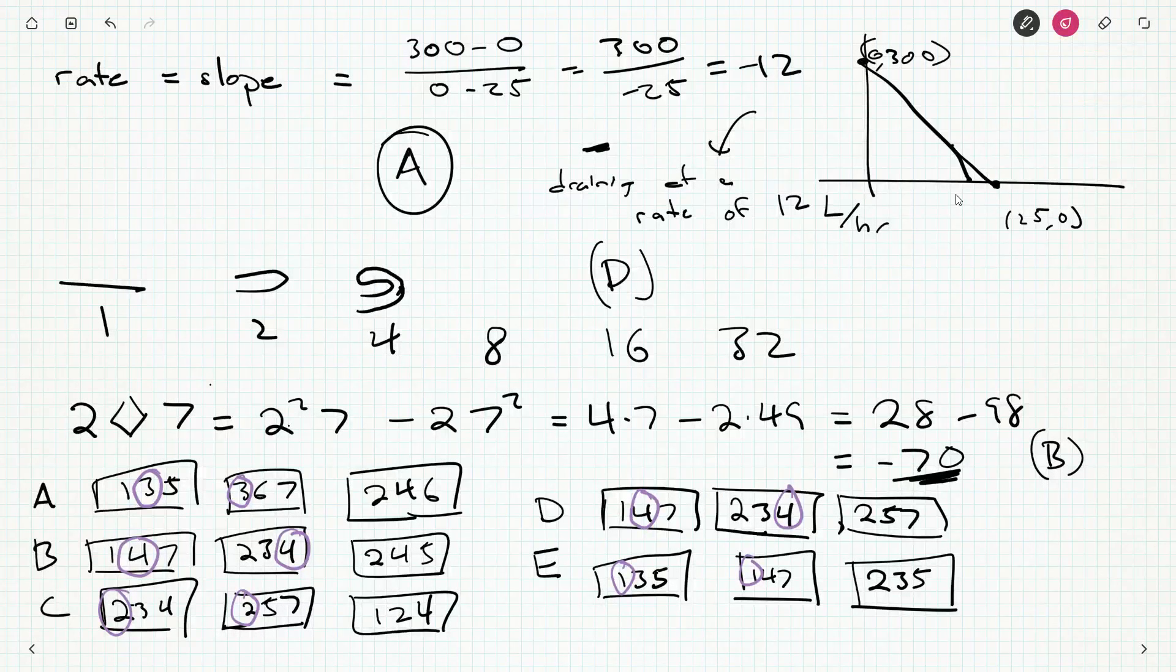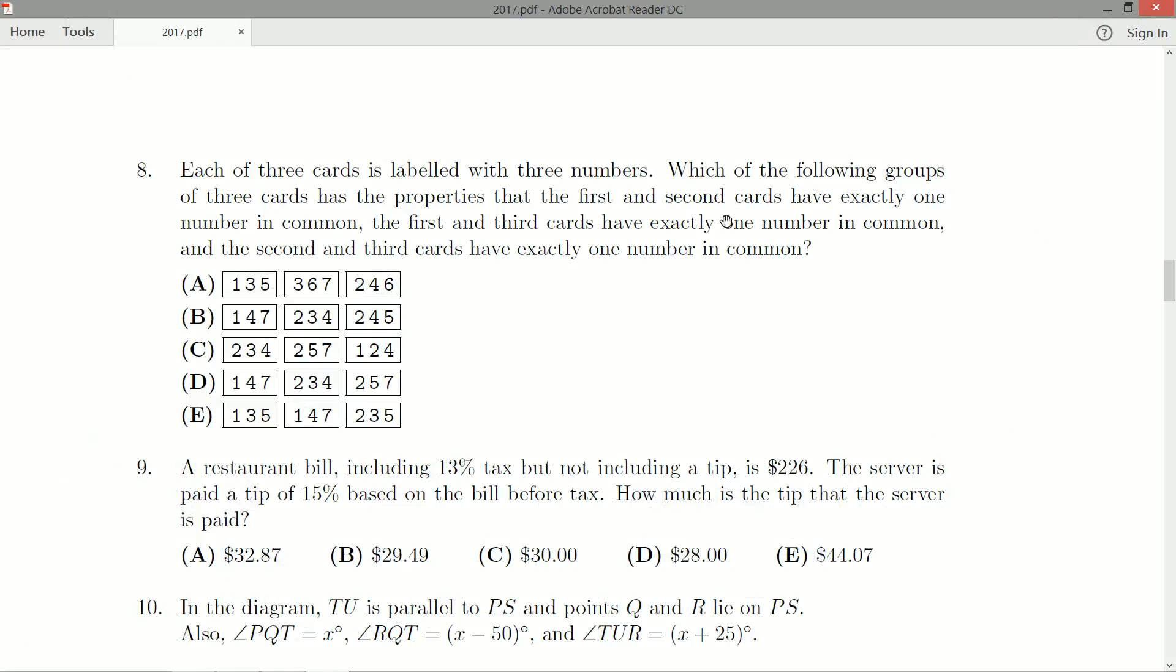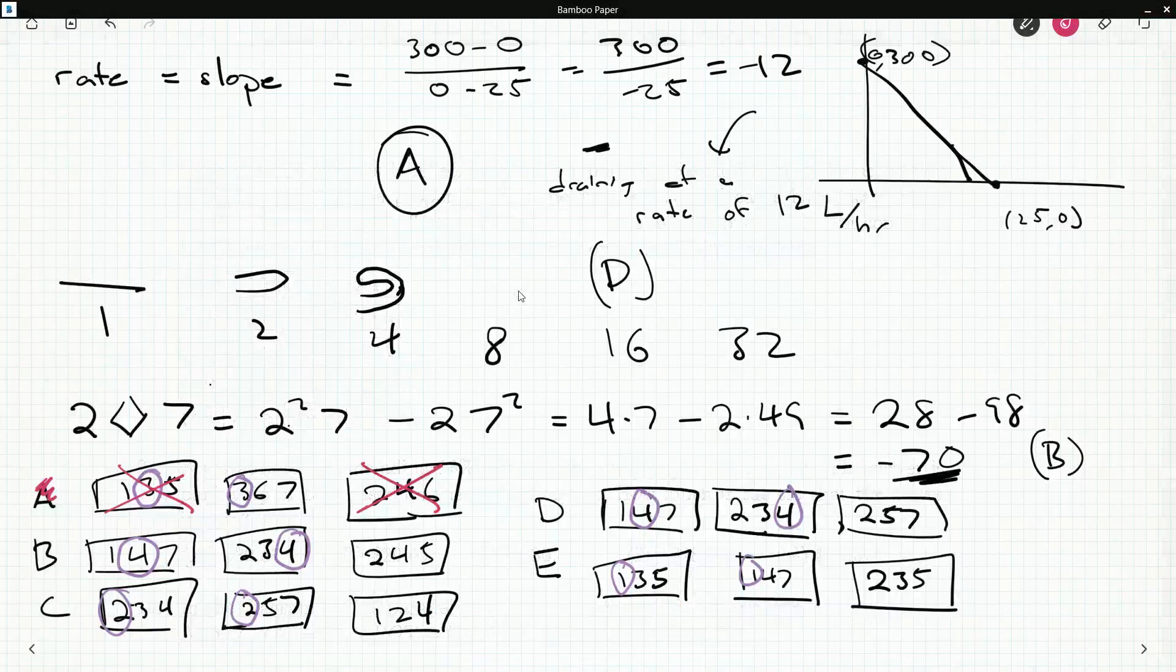Let's take a look at the first and the third. So one, three, five; two, four, six. Well, these guys have nothing in common. So A is out, right? Each one needs—so first and second cards have one number in common, first and thirds have one number in common, and second and third have one number in common. A is out. Fails.